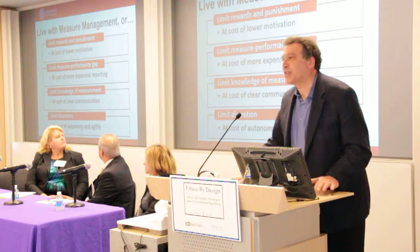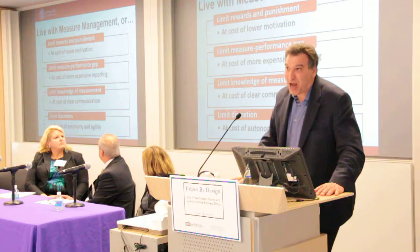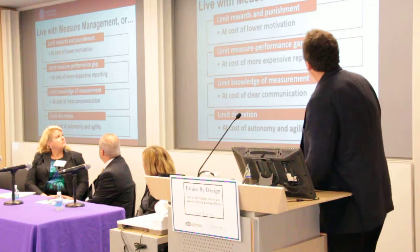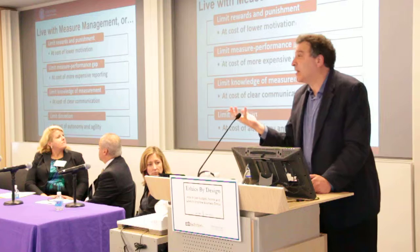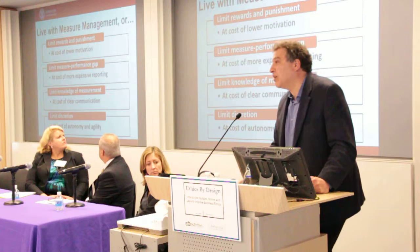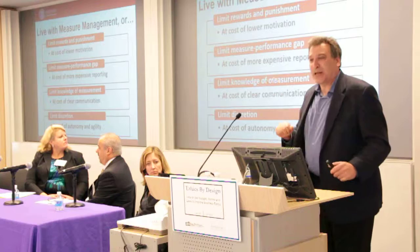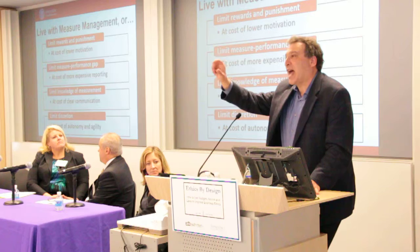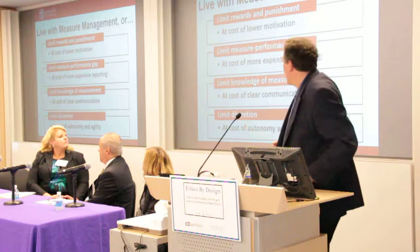What can we do about it? It turns out this is a world of trade-offs. Campbell is basically right — the more you ramp up those incentives, the more you're going to get measure management. We're in a world of compromise when we design our ethical systems. We can limit accountability, and that will reduce measure management, but it also reduces motivation and control. We can pay to build a much better reporting system that makes it harder to create a gap between what we actually care about — what counts — and what's getting counted.